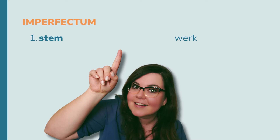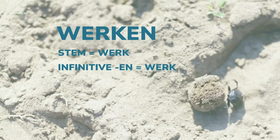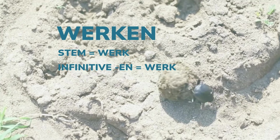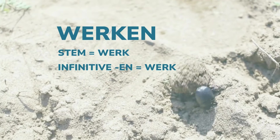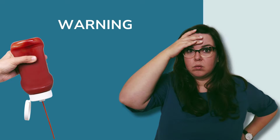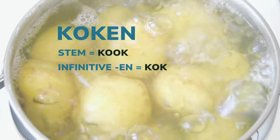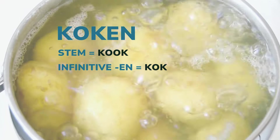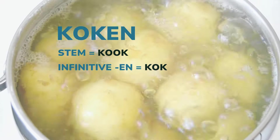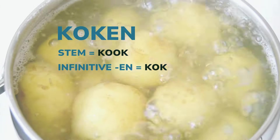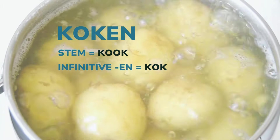Now let's take a look at the imperfectum. Take the stem of a verb — in the example of 'werken,' it's 'werk.' The stem is the same as the infinitive minus -en, which we used for the ex soft ketchup rule. But be aware, this is not always the case. For instance, the stem of 'koken' is 'kook' and not 'kok.' I teach you to use the infinitive minus -en for the ex soft ketchup rule to avoid some exceptions.